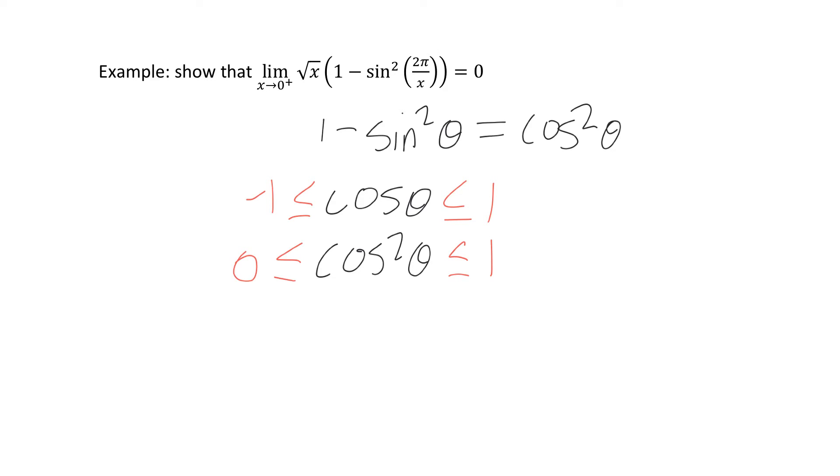So now what we can do is say, okay, we also have this √x here in front, so we're going to multiply everything by √x. So the next step here, we'll have 0 times √x, well that will still just be 0, and then I'll have √x·cos²θ less than or equal to √x.